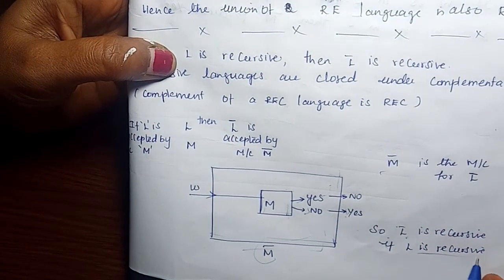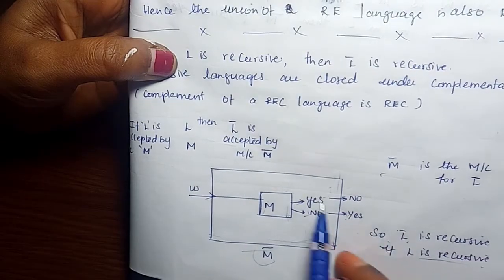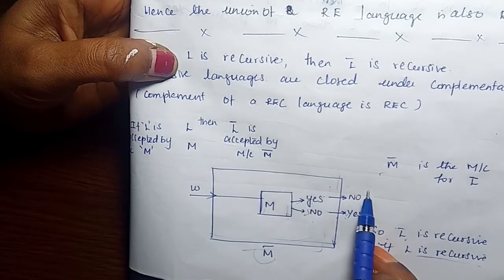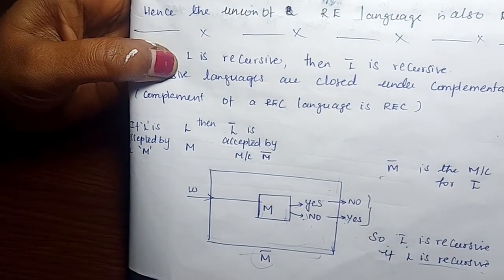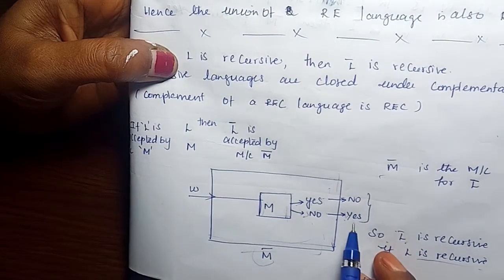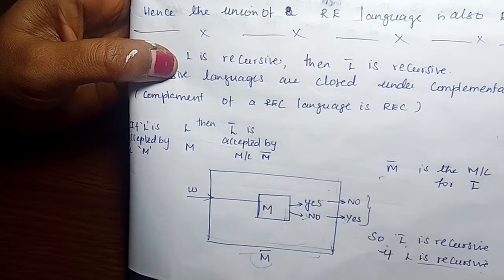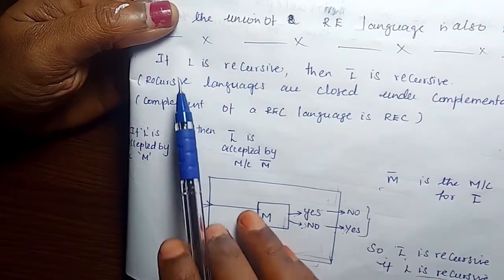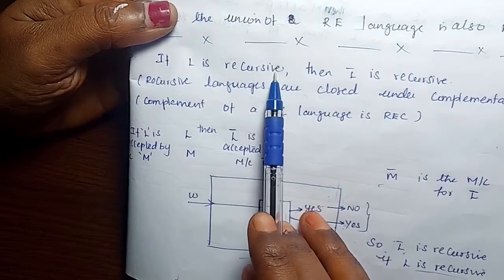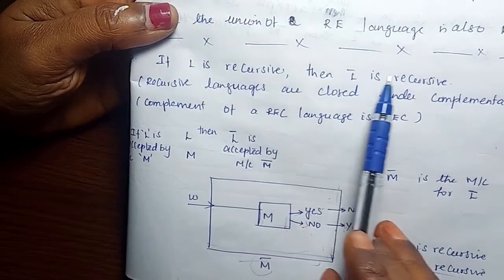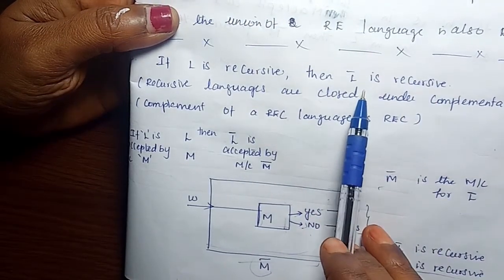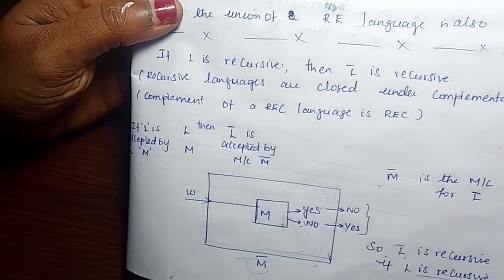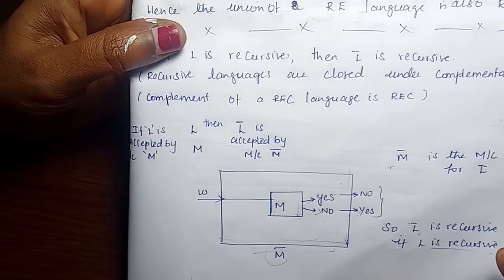M-bar is the machine for L-bar, so L-bar is recursive if L is recursive. In either case the machine halts on both yes and no cases. Therefore, if L is recursive, then L-bar is also recursive.